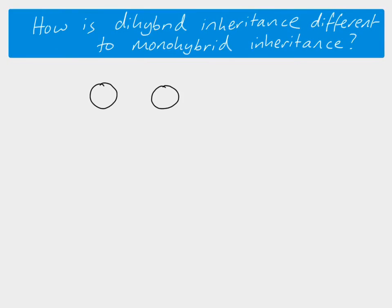Let's take an example. Let's say we're looking at peas, and these particular peas can either be green or they can be yellow. The green colour is coded for by the dominant allele, so we'll give that a capital R, and therefore the yellow colour is recessive. And then we've also got a gene for the surface — the surface can be wrinkly or it can be smooth. The wrinkly surface is dominant, so we'll give that a capital Y, and the smooth surface is recessive.